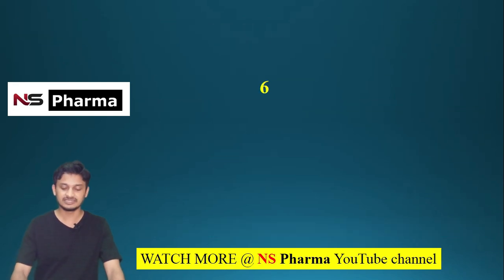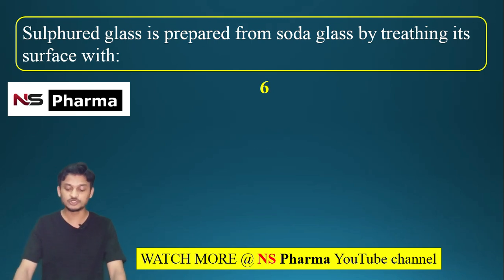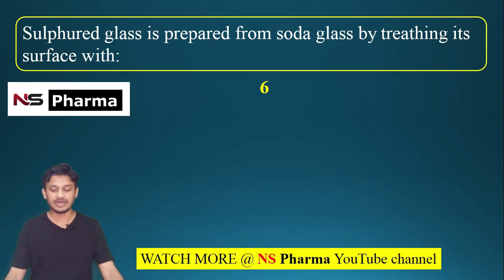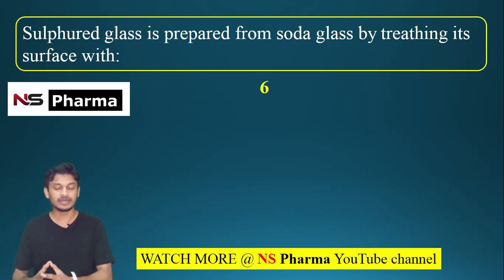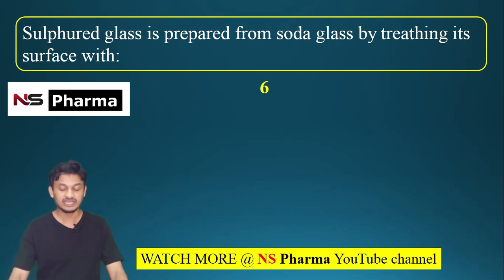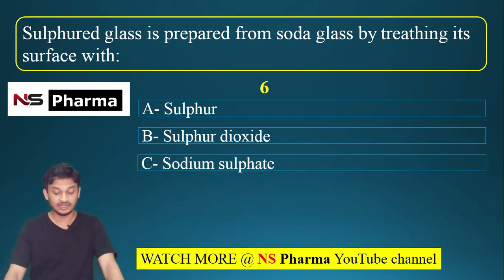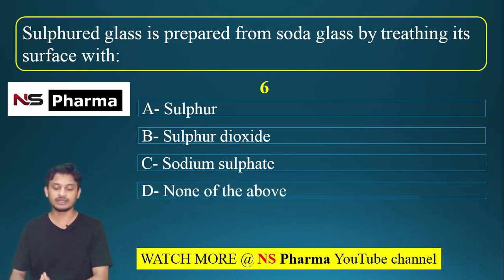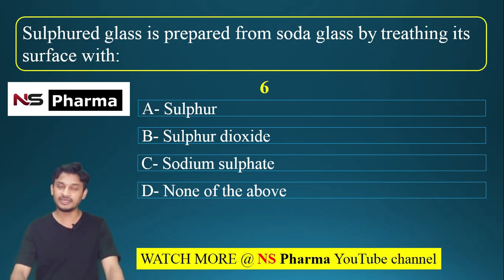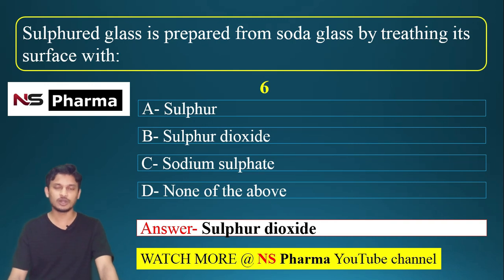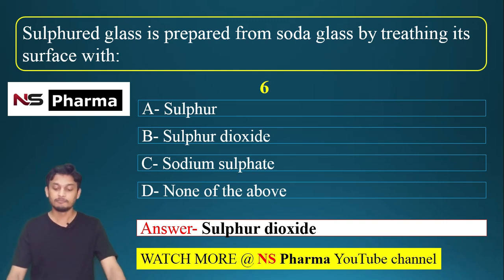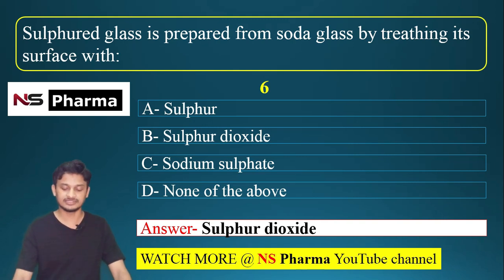Question number 6: sulfured glass is prepared from soda glass by treating its surface with — options are sulfur, sulfur dioxide, sodium sulfate, or none of the above. The correct answer is option B, sulfur dioxide. This is an important question that has appeared in many exam papers. Sulfured glass is prepared from soda glass by treating its surface with sulfur dioxide.